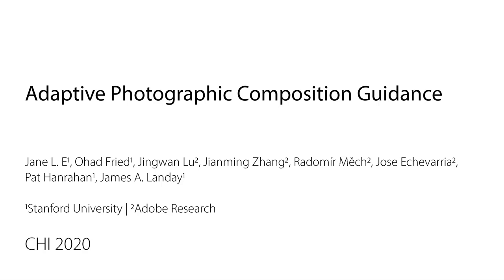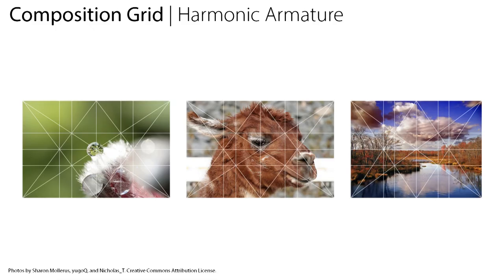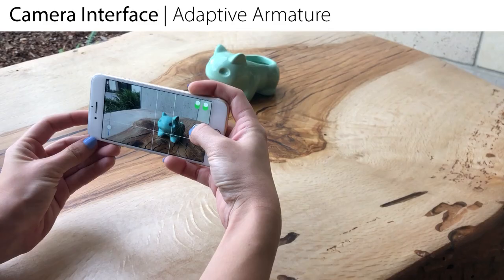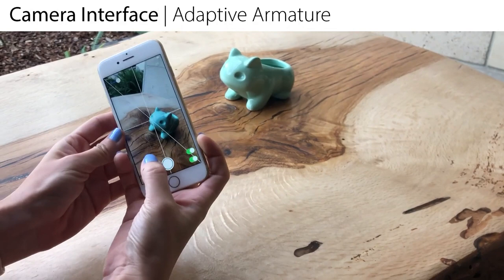Composition is an important aspect of photography and is often described using composition grids like the harmonic armature, but only some lines are relevant for a given image. We design a saliency based algorithm for automatically determining these relevant lines and present a capture time tool that overlays these lines or adaptive armatures on the camera viewfinder.